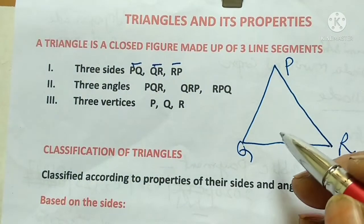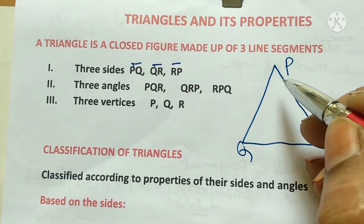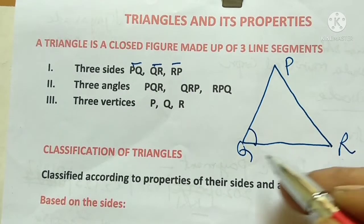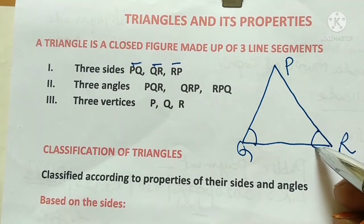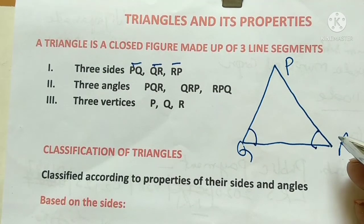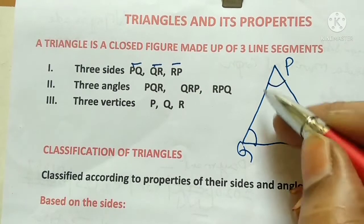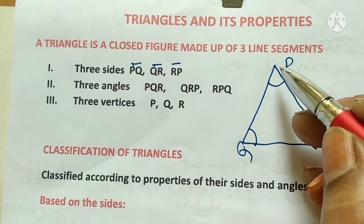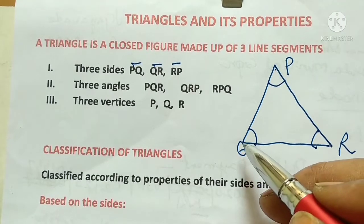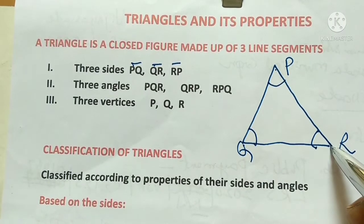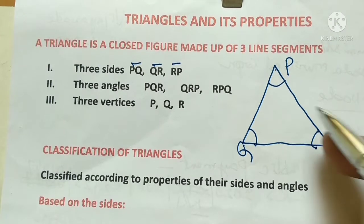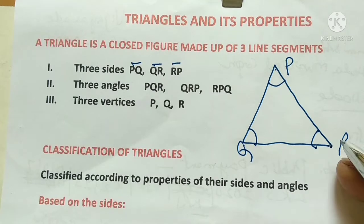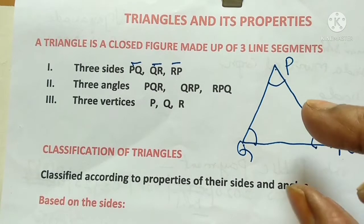We have three angles: angle PQR, angle QRP, and angle RPQ — three angles. We also have three vertices: P, Q, and R. So a triangle has three sides, three angles, and three vertices.